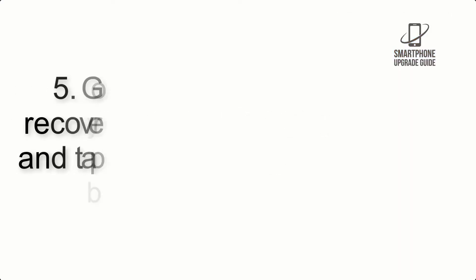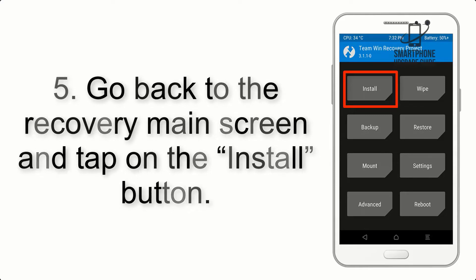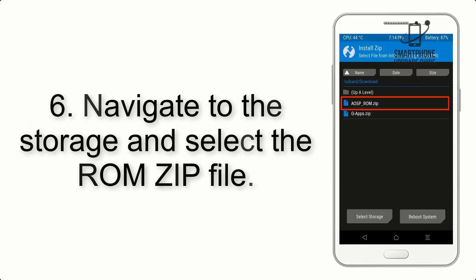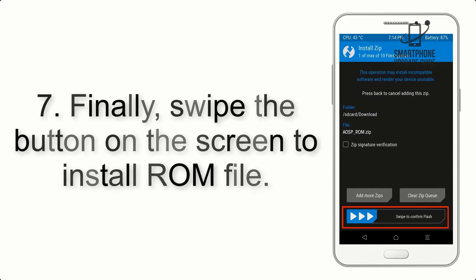Step 4: Swipe the button to wipe the device. Step 5: Go back to the recovery main screen and tap on the Install button. Step 6: Navigate to the storage and select the ROM zip file.